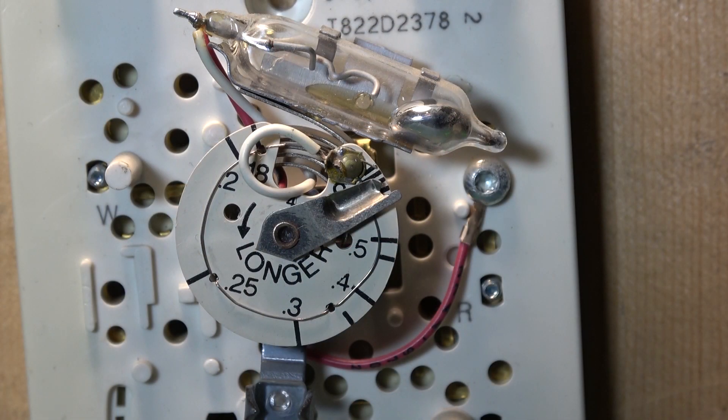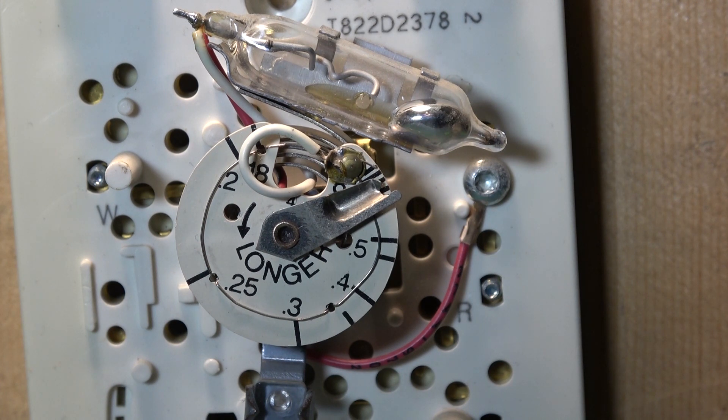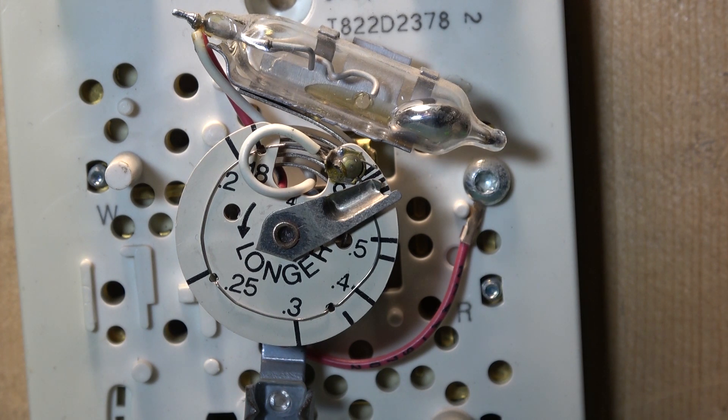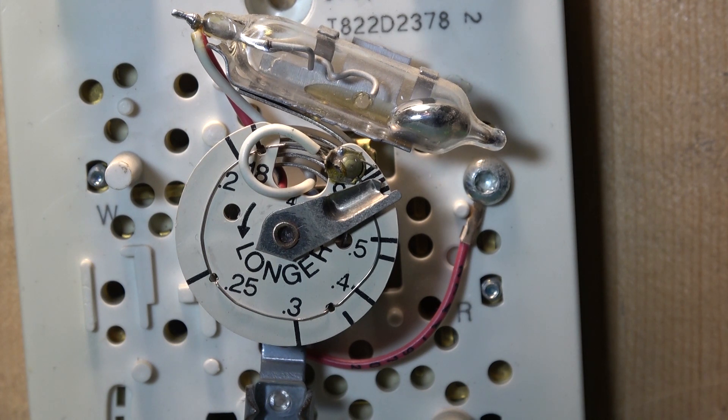So now the heater is turned off and the house will slowly cool off and now you'll see the mercury bead slowly go back the other way as the bi-metal coil contracts. I'll speed this up here so you can watch.